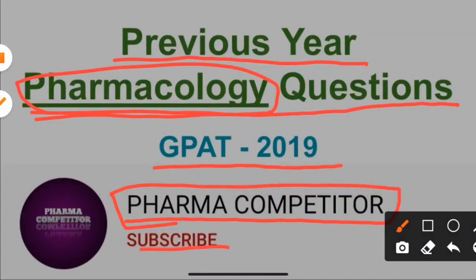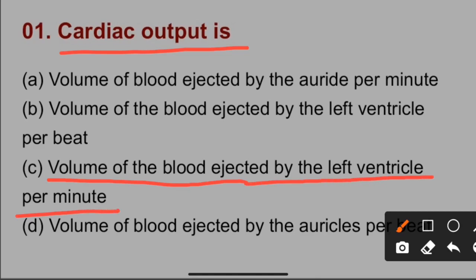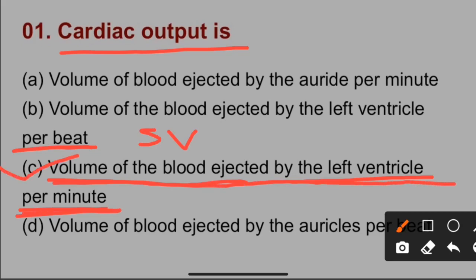Question number one: Cardiac output is the volume of blood ejected by the left ventricle per minute. If 'per beat' is written, then it will be stroke volume, not cardiac output. The normal cardiac output of the heart is 5 to 6 liters per minute. Cardiac output is the multiplication of stroke volume and heart rate.